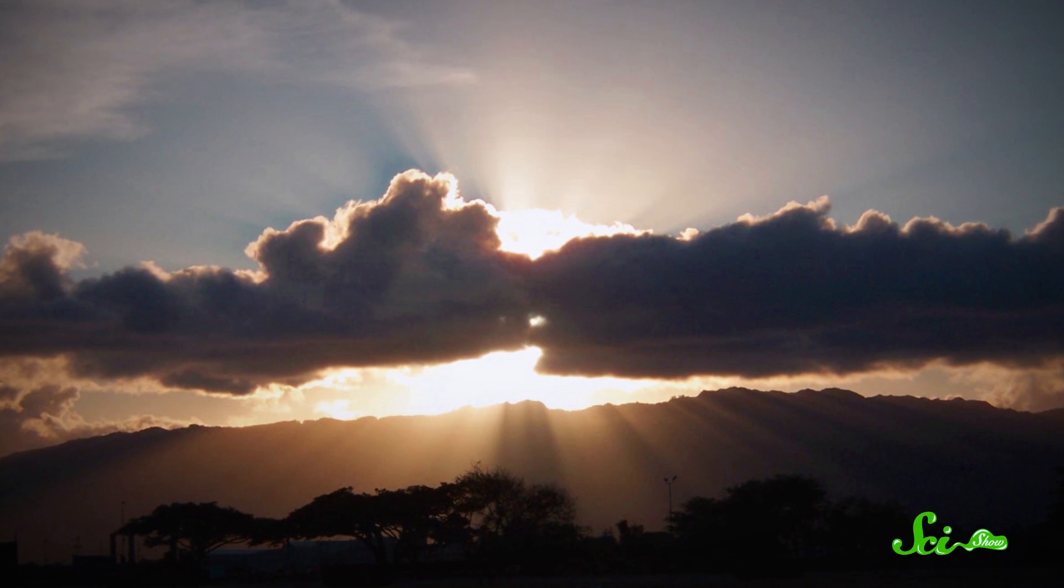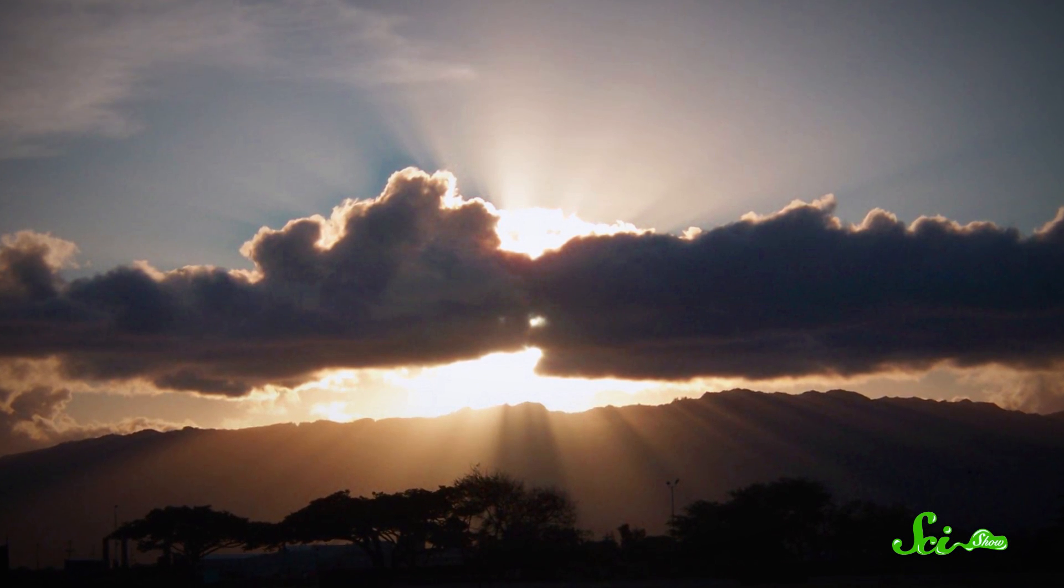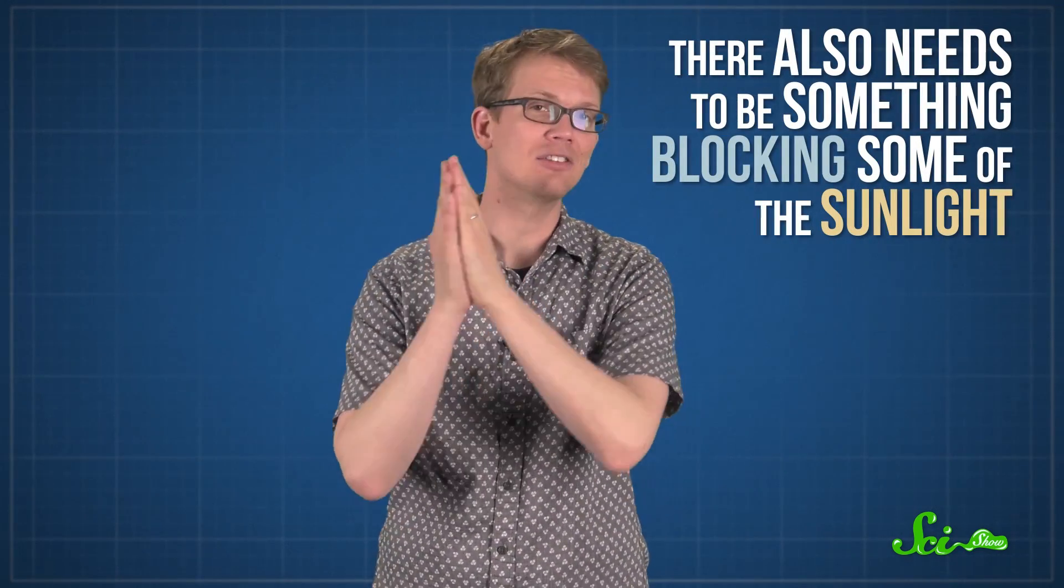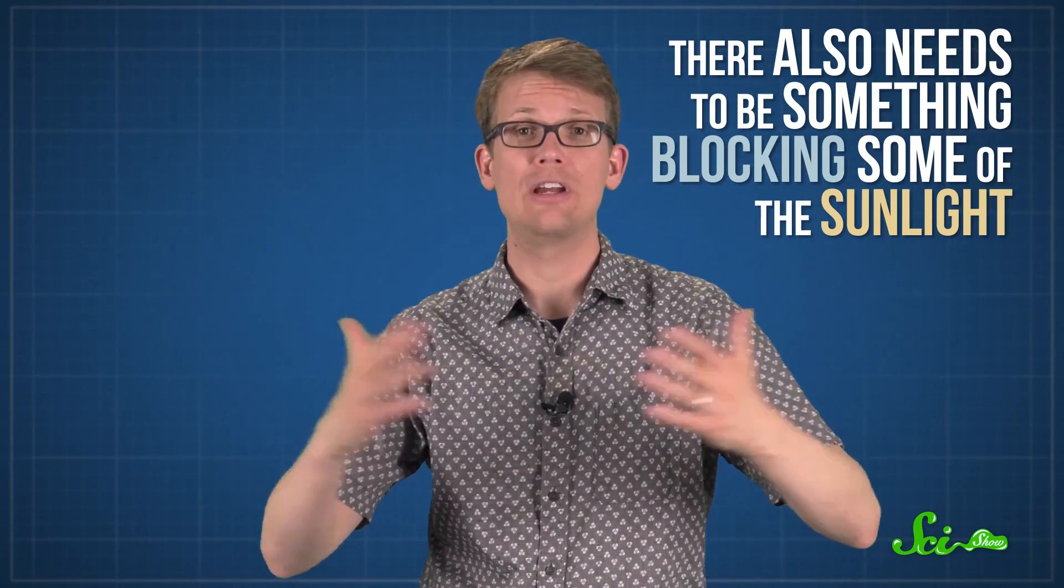Sometimes the rays don't look white, which just means that the light hitting them wasn't white to begin with. So crepuscular rays around sunset will be redder, since sunlight looks pretty red by that point. But crepuscular rays aren't always visible whenever there's a lot of dust or moisture in the air. There also needs to be something blocking some of the sunlight. Without anything in the way, we wouldn't be able to see the paths of the individual rays, no matter how much stuff was in the air. Light would be bouncing off of everywhere equally, and everything would look equally lit up.